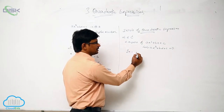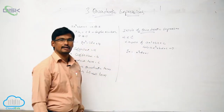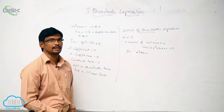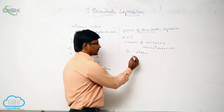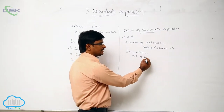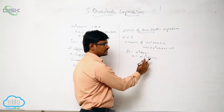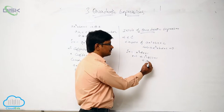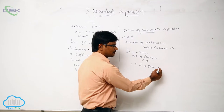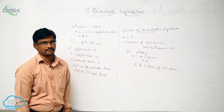For example, consider the quadratic expression x squared minus 2x plus 1. Let x equal to 1. Substituting: 1 squared minus 2 times 1 plus 1 equals 1 minus 2 plus 1 equals 0. Therefore, 1 is a zero of this quadratic expression.